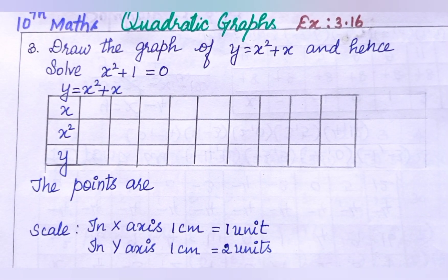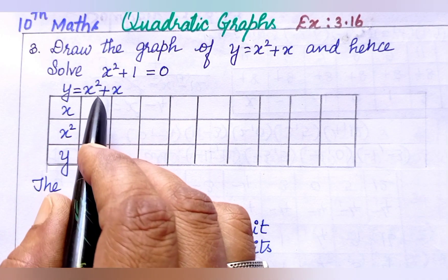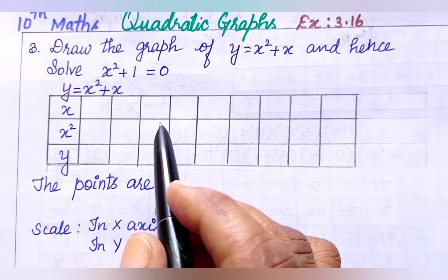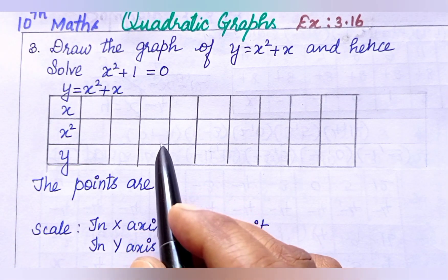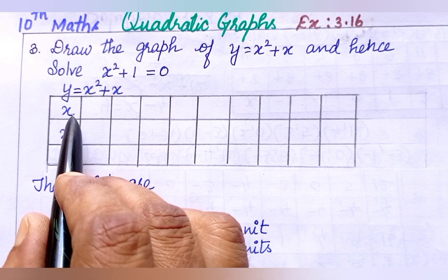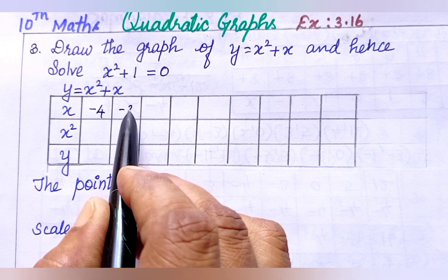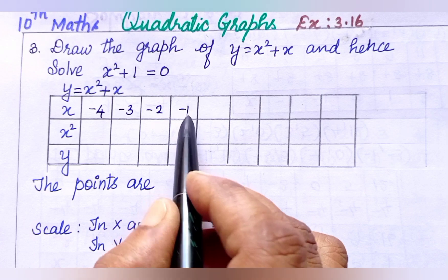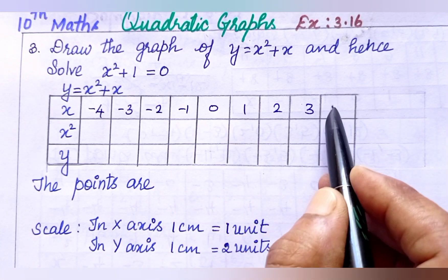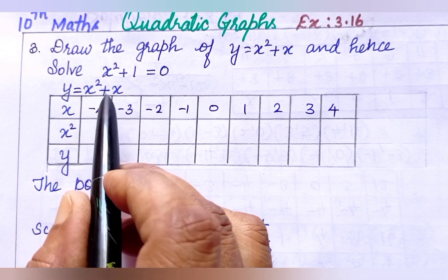So first we need to draw the parabola for y equals x squared plus x. We will use x values from minus 4 to plus 4, so the values are 1, 2, 3, 4.